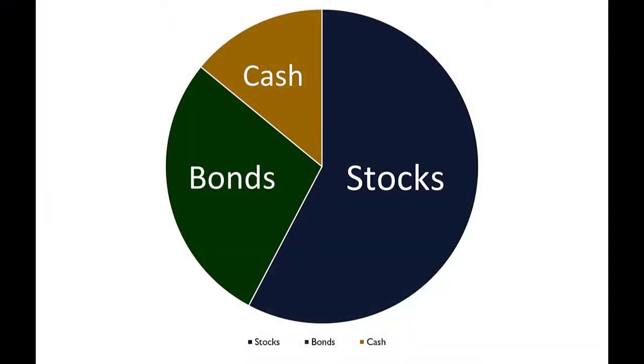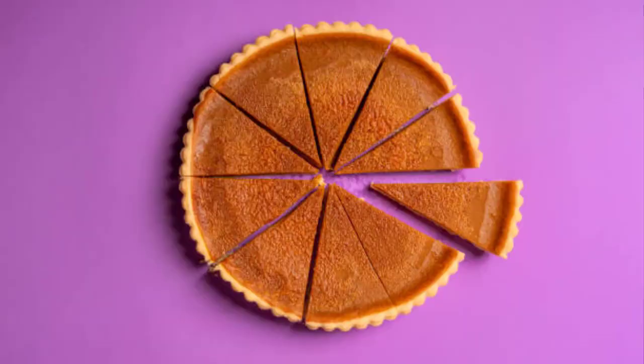To get started, I want you to think about the statements you get from your 401k or your IRA. Every time you get one of these statements, it's got a pie chart like this that shows you the percentage you have in stocks, bonds, and cash. It might divide it up a little more and show you international or various investments, but essentially it's got everything lumped together as a wedge in a pie. That's great during the accumulation phase when investing is pretty simple, but once you get to the distribution phase and you're taking money out of your investments, this is not sufficient — this is not enough.